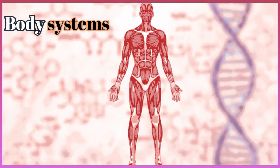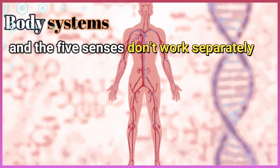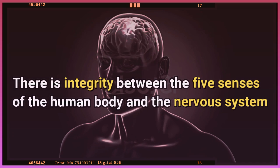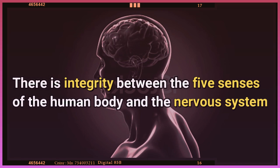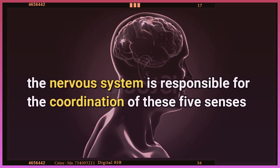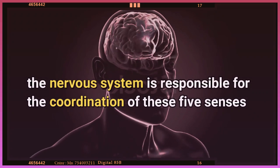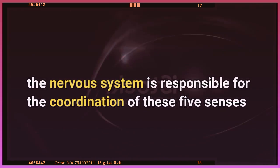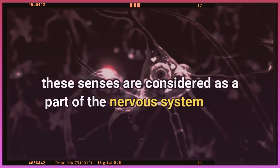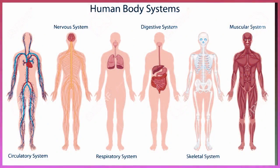These systems and the five senses don't work separately. There is integrity between the five senses of the human body and the nervous system. The nervous system is responsible for the coordination of these five senses, and these senses are considered as a part of the nervous system. They work integrally with the other body systems. Mammals such as humans, elephants, and dogs have the same structure of nervous system.